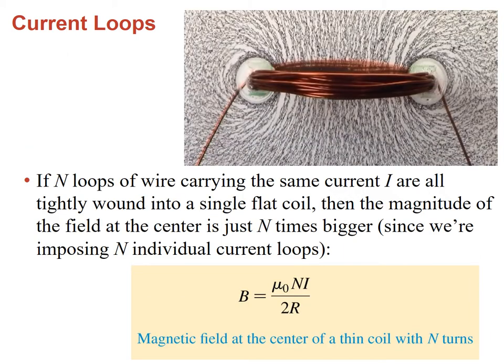If instead of having a single loop we have N number of turns, then all we have to do is multiply the previous expression by N to get the field at the center.